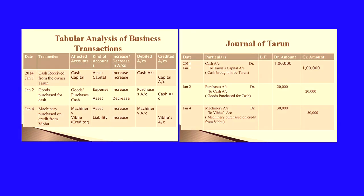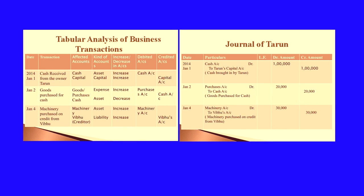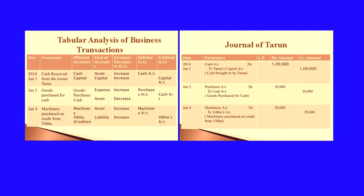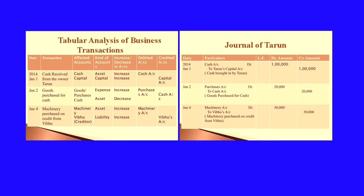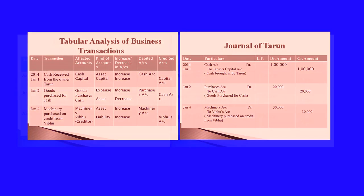On January 4th: machinery purchased on credit from Vipho — Vipho is the creditor. We did not pay the money on that date; payment will be made on a future date, so this is a credit transaction. Machinery and Vipho are the two affected accounts. Machinery falls under asset account, and Vipho being a creditor is a liability. Machinery is increasing (purchased), and liability is also increasing. So machinery account is debited and Vipho's account is credited.